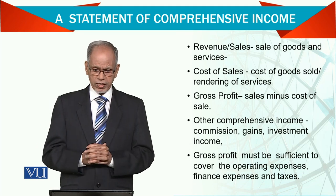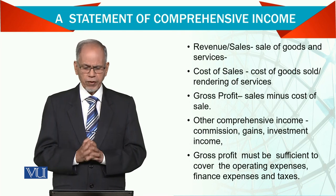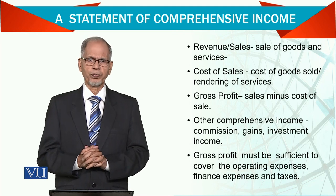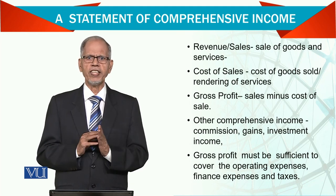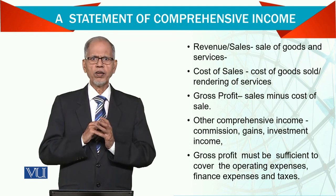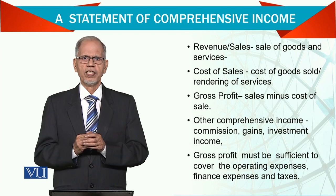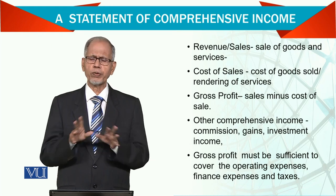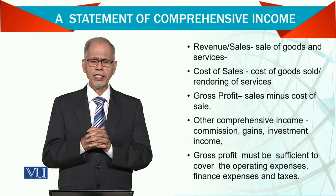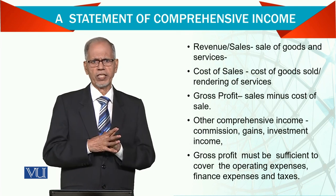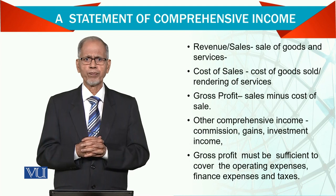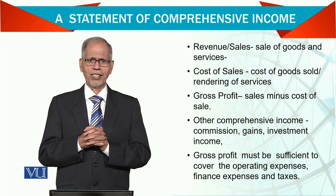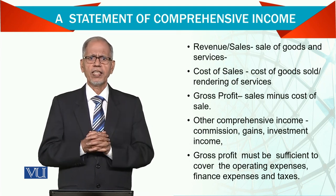Gross profit must be sufficient to cover operating expenses, finance expenses, and taxes. Operating expenses broadly include administrative expenses — staff salaries, utilities, and all other regular expenses — which we club together into administrative expenses. As far as marketing expenses are concerned, we call them selling and distribution expenses, and whatever we spend on marketing is clubbed together in the selling and distribution expense.